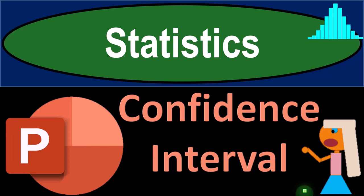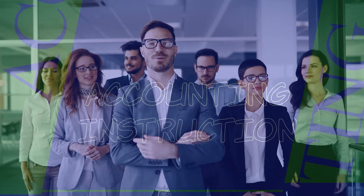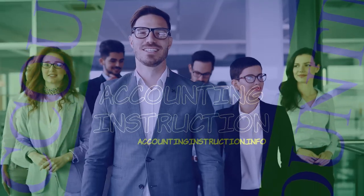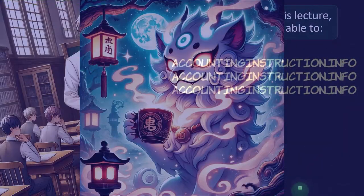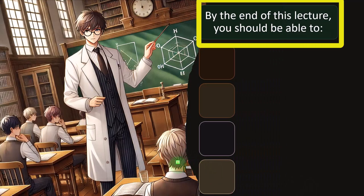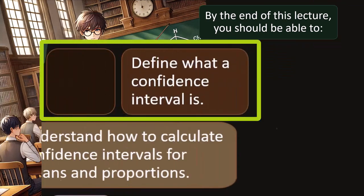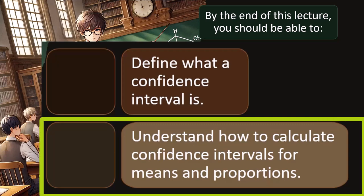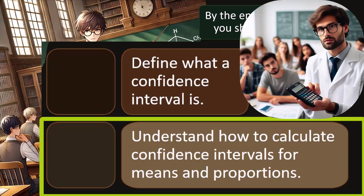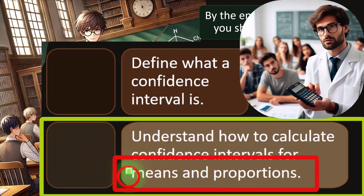Statistics. Confidence interval. Get ready and grab some coffee, because if we want to get futuristic, we need statistics. By the end of this presentation, we will be able to define what a confidence interval is, and understand how to calculate confidence intervals for means and proportions. When talking about means or proportions, that describes the type of data we're looking at and whether that data is binomial in nature or not.